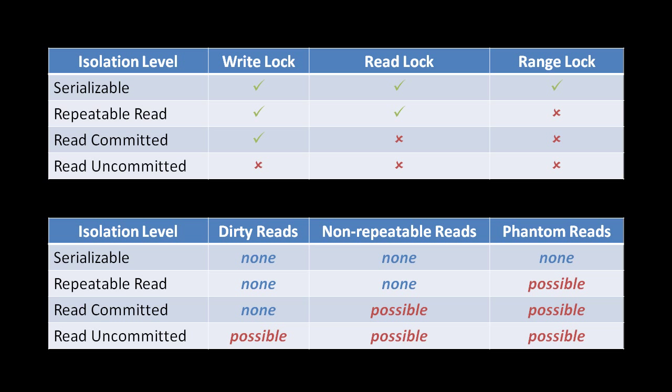For example, say we have a database for a flight booking system. When a customer buys a seat, we're updating both a new customer record and the seat in the plane which is no longer available. If at the same time another transaction is triggered by a customer trying to find out whether a seat is available, they might erroneously see that the seat is still available, even though in another table it's been recorded that a customer has purchased it. This could lead to a situation where two people end up buying the same seat.